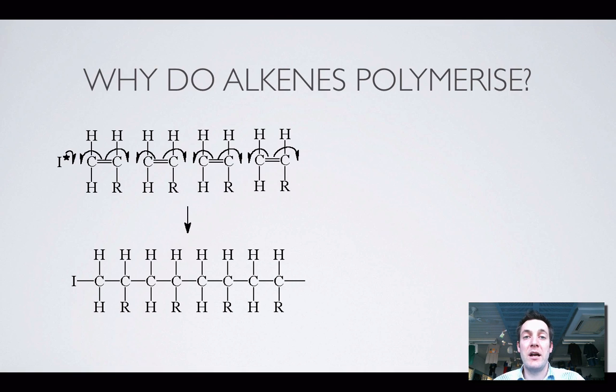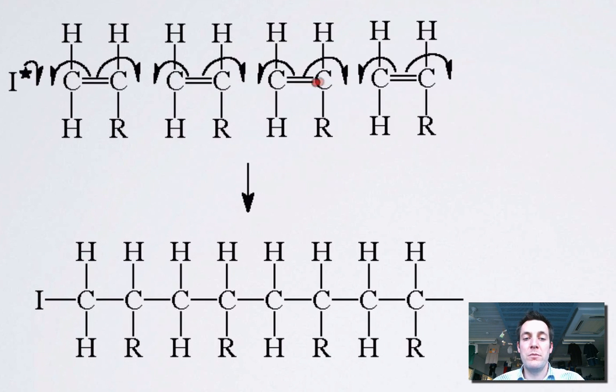Seeing as we're talking about addition polymerization, let's have a look at why alkenes polymerize in the first place. So why is it that I can join lots of similar alkenes together? If I take lots and lots of monomers represented side by side, these arrows are showing me the double bonds opening up.